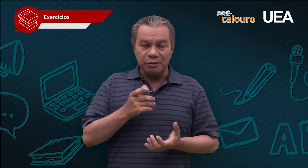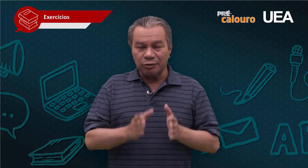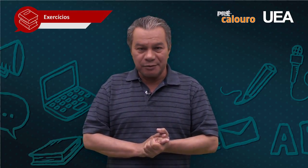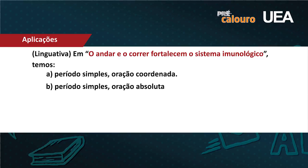Quando o período é simples, a oração é automaticamente absoluta. A letra B — período simples e oração absoluta — agora tem lógica. Só que você precisa olhar a quantidade de verbos no período. Vamos tentar encontrar a quantidade de verbos? O andar e o correr fortalecem o sistema imunológico. Eu sei que você, quando olha para 'andar' e para 'correr', pensa imediatamente em verbo.